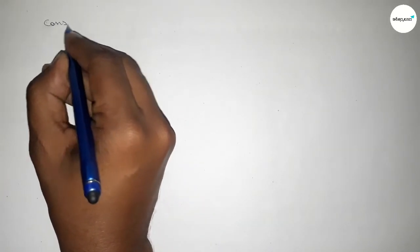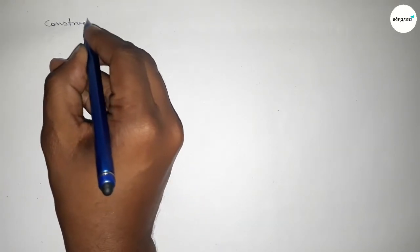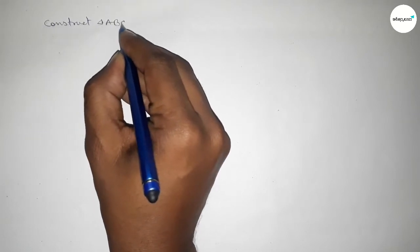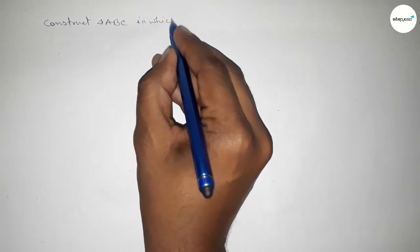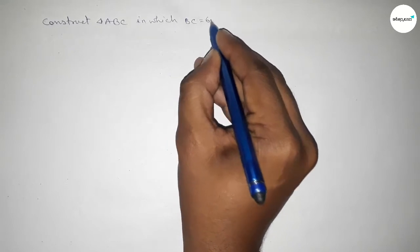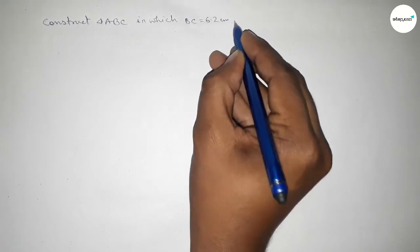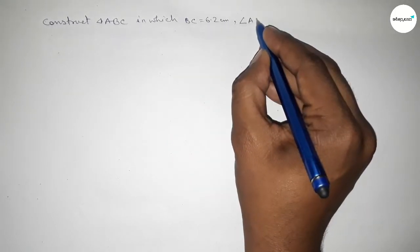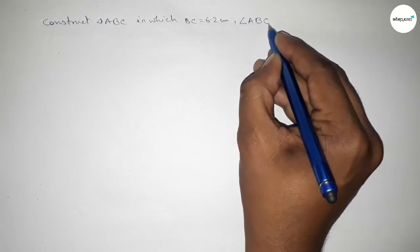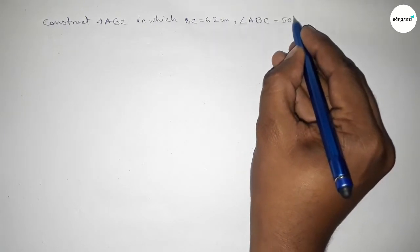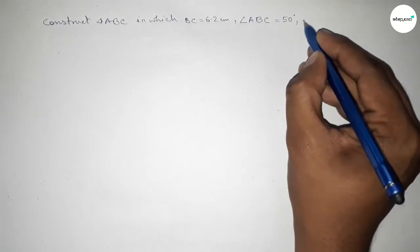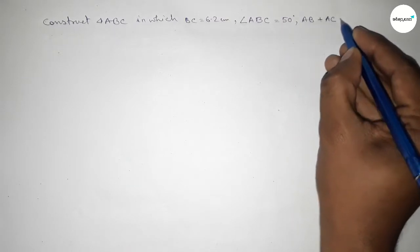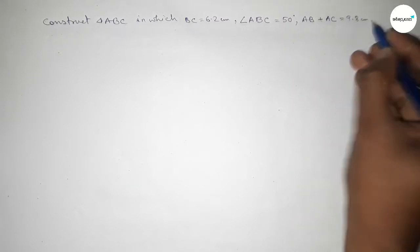Hi everyone, welcome to SI Share Classes. Today in this video we have to construct a triangle ABC in which BC equals 6.2 centimeters, angle ABC equals 50 degrees, and AB plus AC equals 9.8 centimeters.